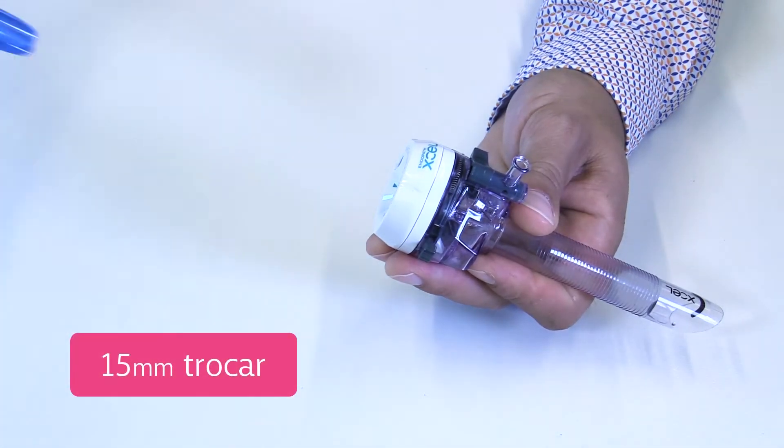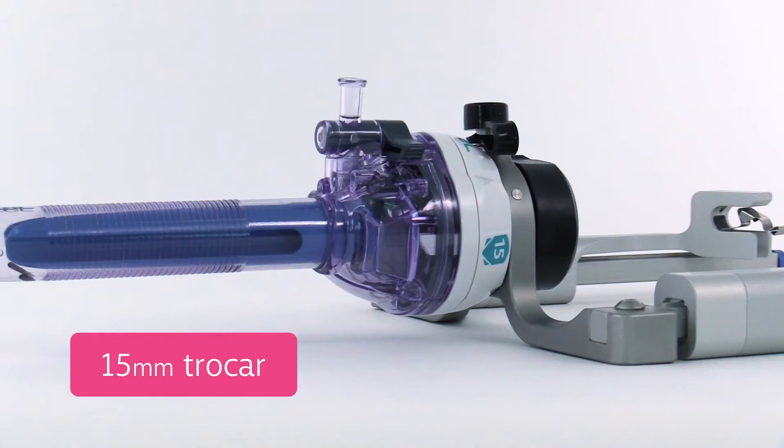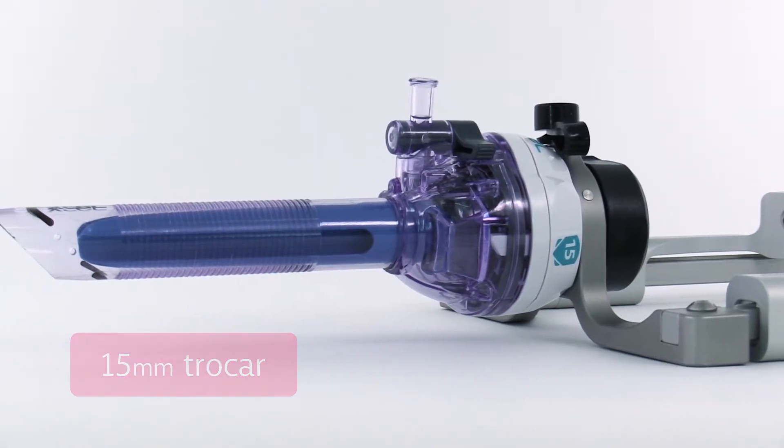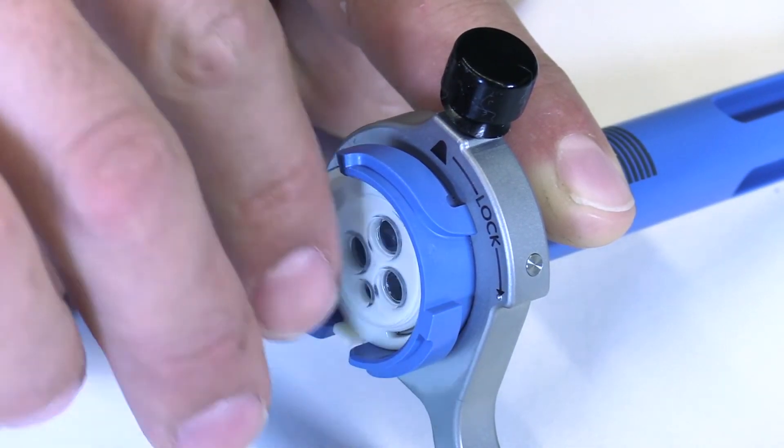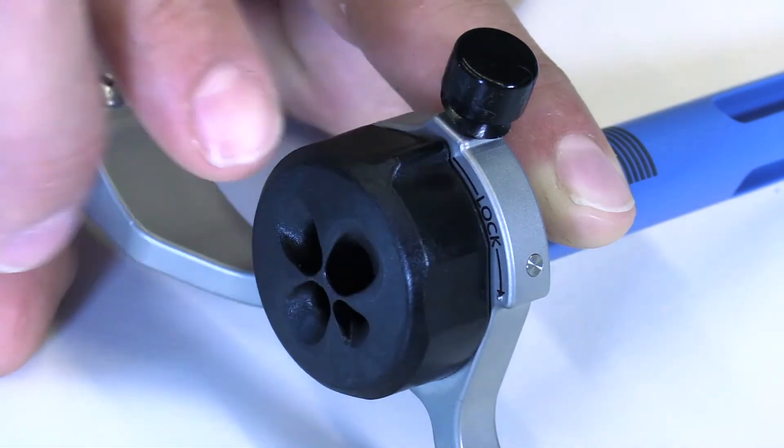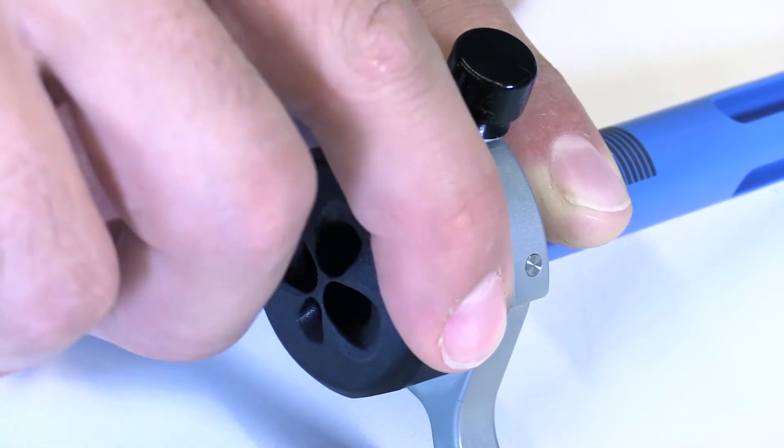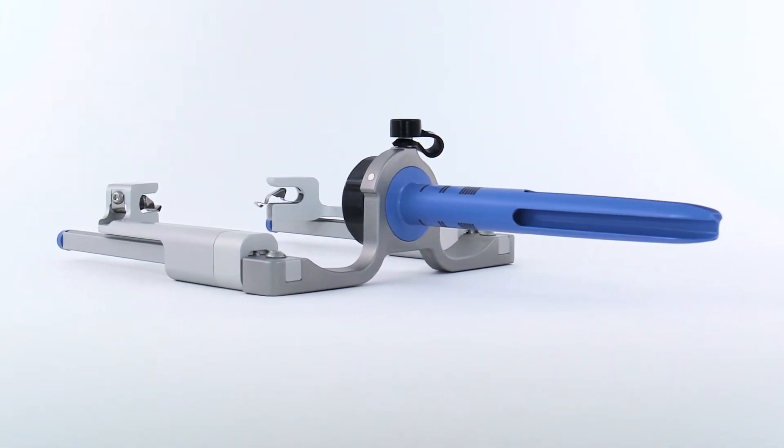The introducer is inserted through a 15 millimeter trocar in the umbilicus in free-floating mode. To maintain pneumoperitoneum throughout the procedure, a disposable sealing unit is loaded and locked into position with a cap. The introducer is reusable and can be easily cleaned, sterilized and maintained.